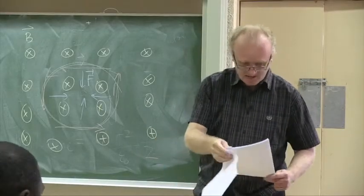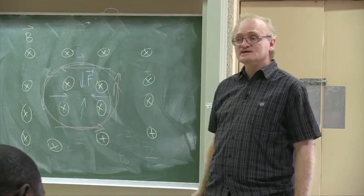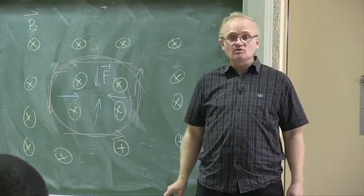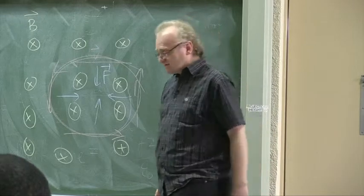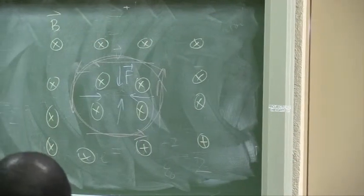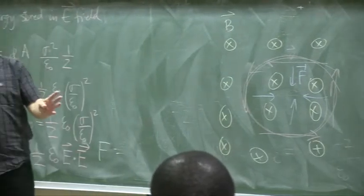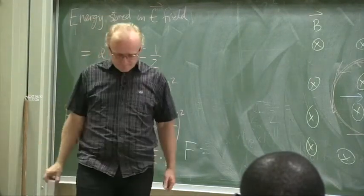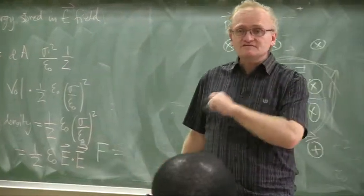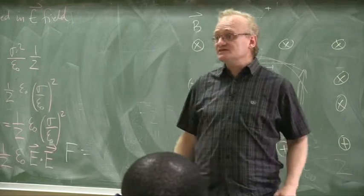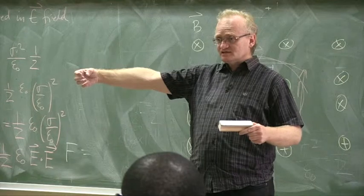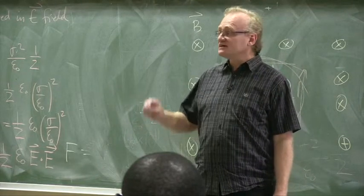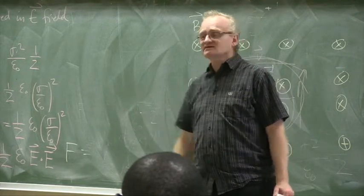There's one more thing I want to do, which is to discuss currents. Let's define what a current is. Currents are what set up magnetic fields. In the same way that we had electrostatics — electric fields that didn't depend on time — we now want to talk about magnetostatics, meaning a set of magnetic fields that don't depend on time. To get a magnetic field that does not depend on time, we need a steady current, and we'll define that now.